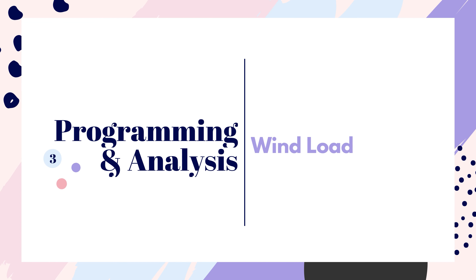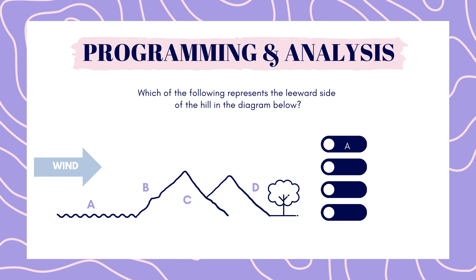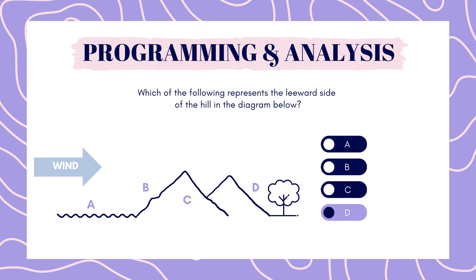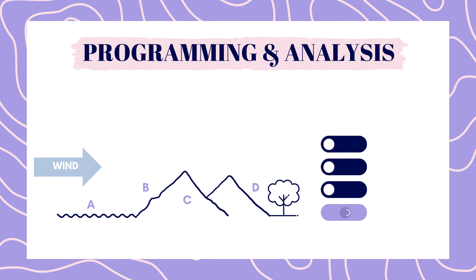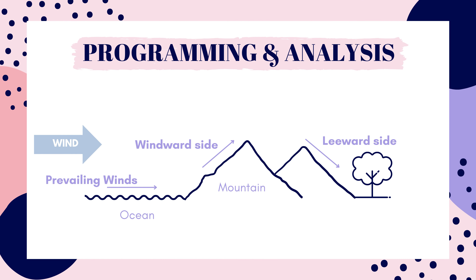Now on to programming and analysis. Which of the following represents the leeward side of the hill in the diagram below — A, B, C, or D? The answer is D. The leeward side is the furthest from the wind direction. Make sure when you have questions asking about wind that you're looking at where the wind is coming from — that's important. The side closest to the wind direction is your windward side. Off of the ocean is where you have your prevailing winds.